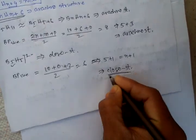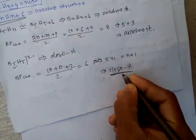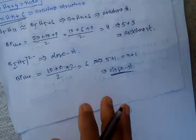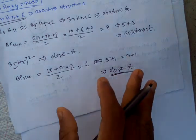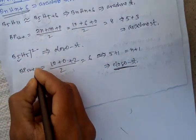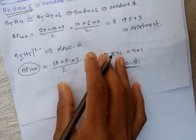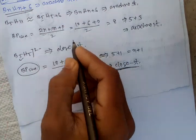So this is a very simple trick to find out the number of skeletal bond pairs and the structure of a boron compound. Thanks for watching.